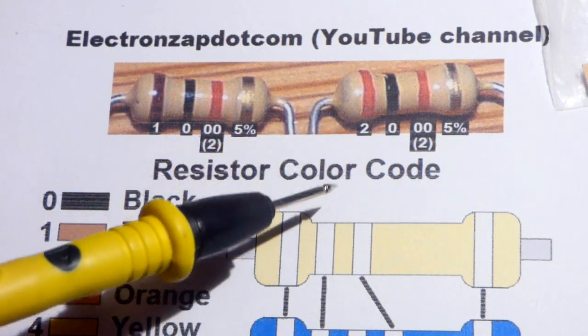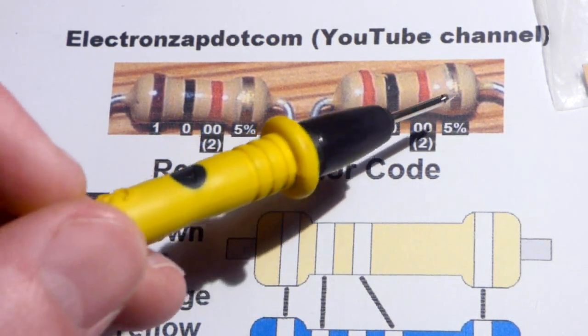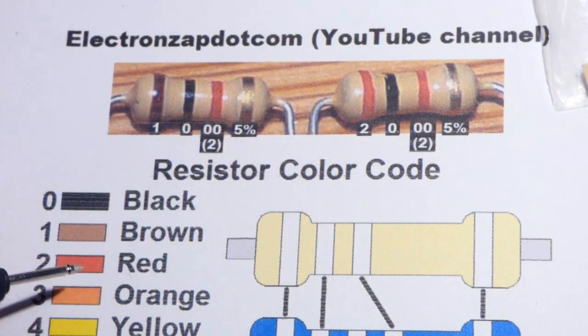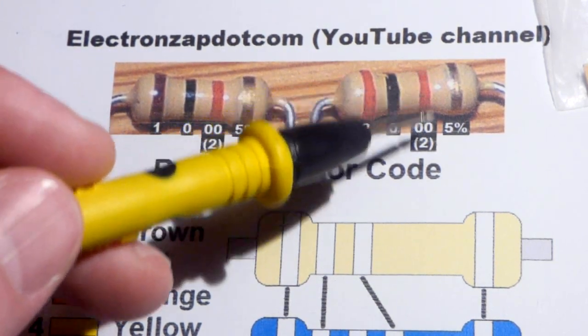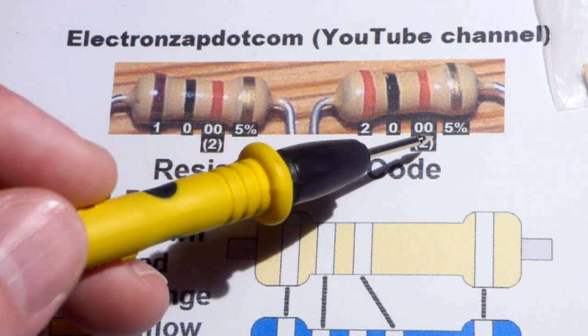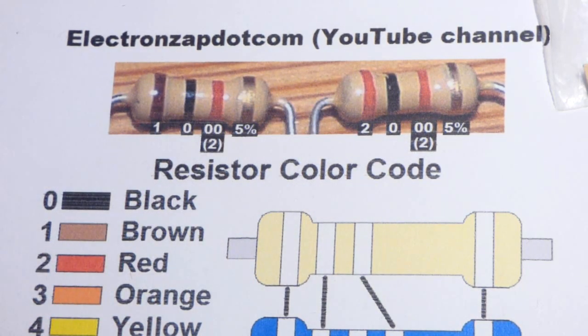So now here, we have everything is the same color except for the first stripe. That is a 2. So we have 2, 0, and then red for two more zeros for 2,000 ohms.